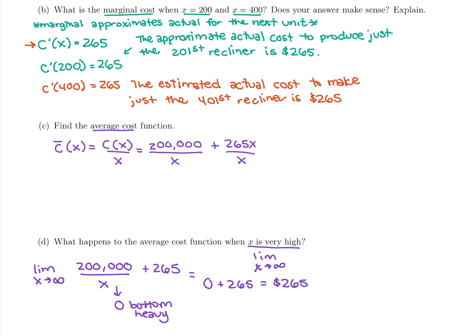So as production levels get very high, the average cost of each recliner goes to $265. Which we already kind of could have predicted from our answers before, just looking at plugging in 200 and 400 it stayed at 265. But taking the limit at infinity will give us that definite answer that as production levels get very high, the average cost of each recliner goes to $265. That's something to keep in mind as they're coming up with their price point for these luxury recliners.